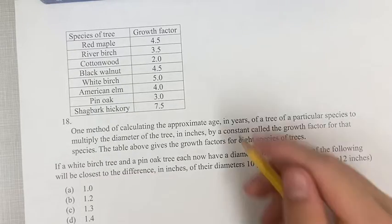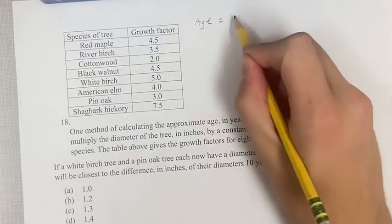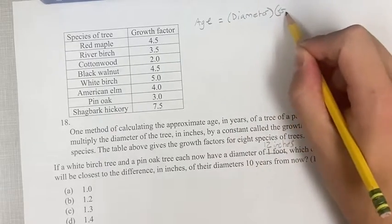So we have a white birch tree. The age we're told you can find by multiplying the diameter of the tree by the growth rate or the growth factor.